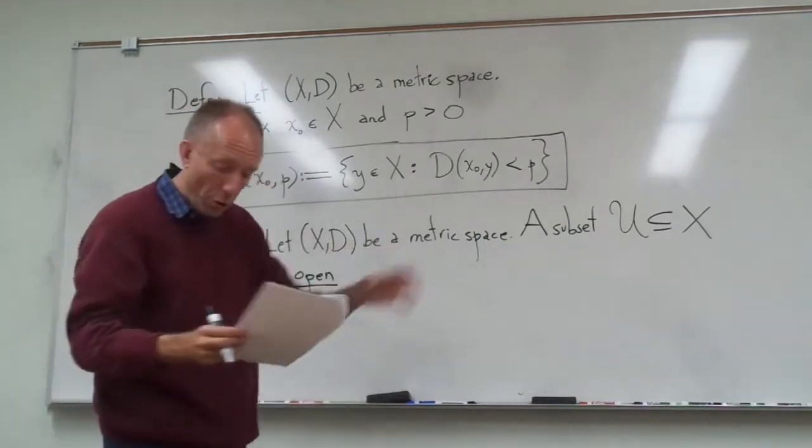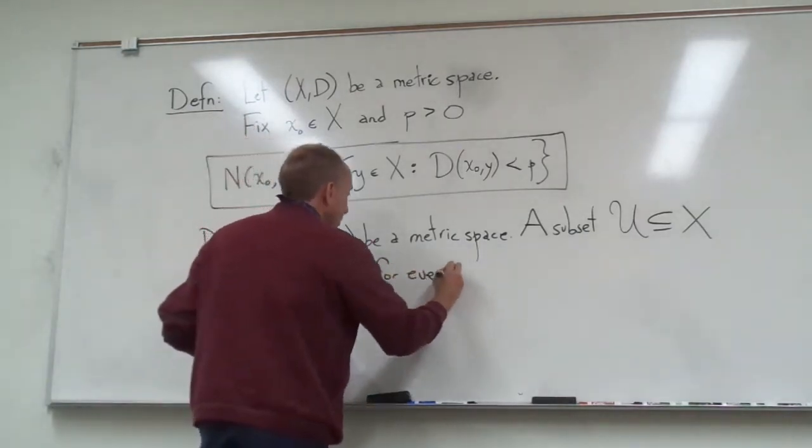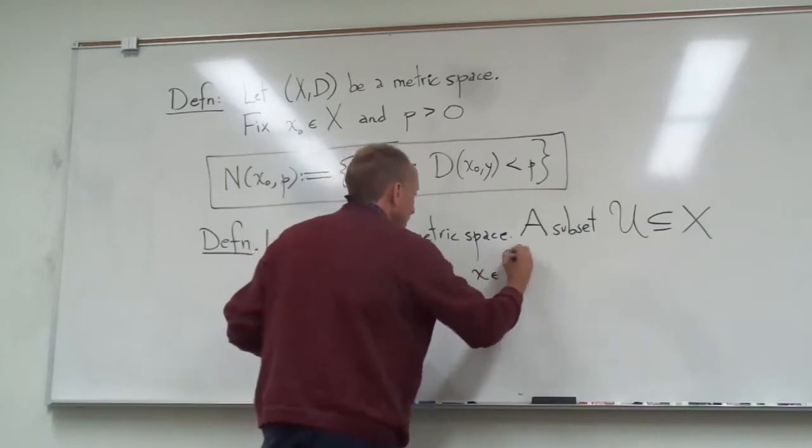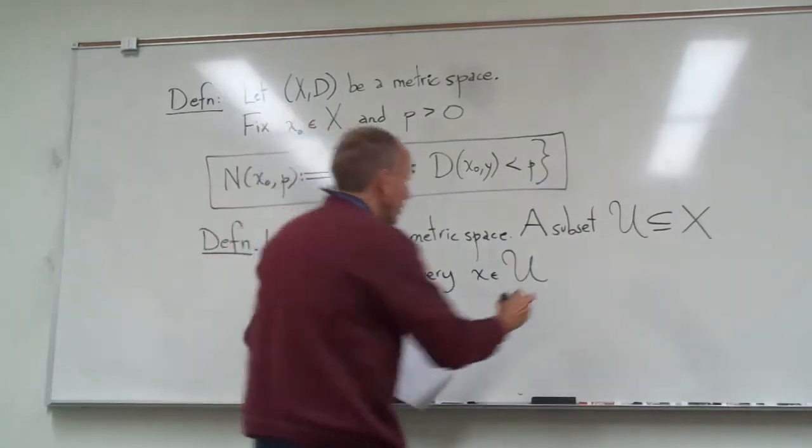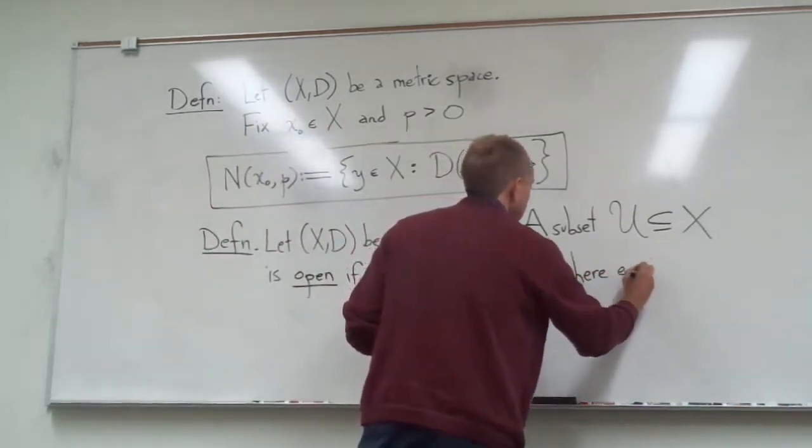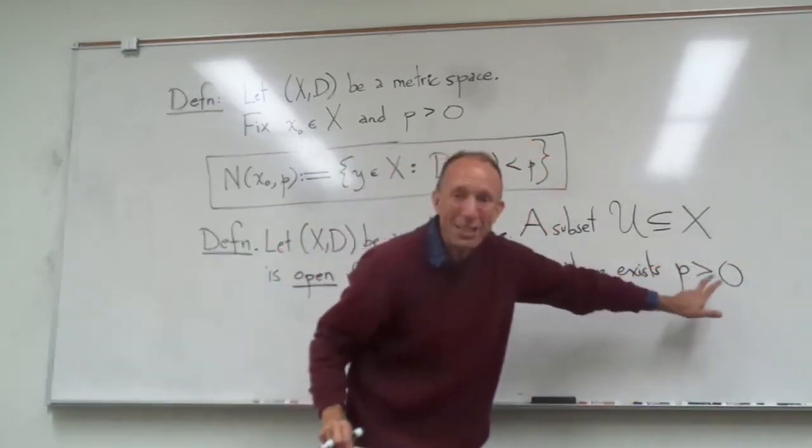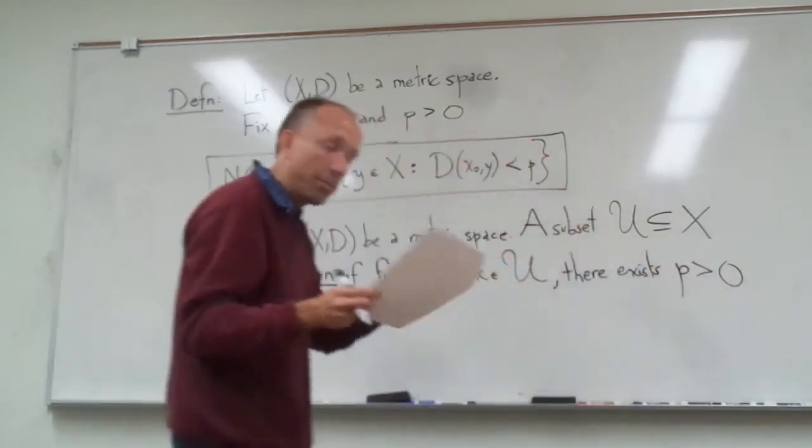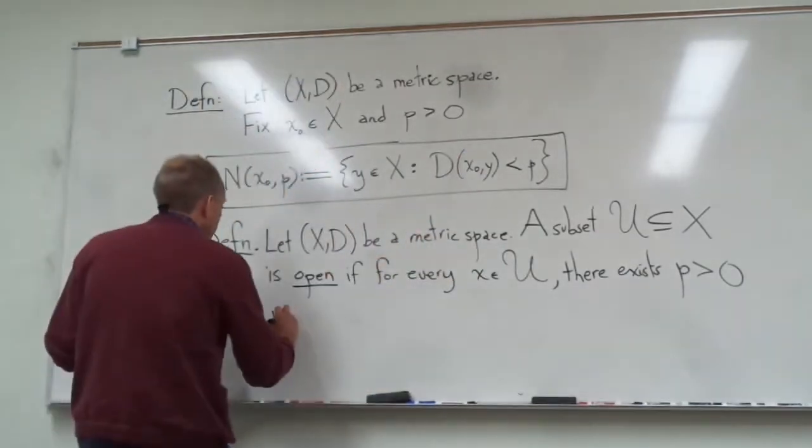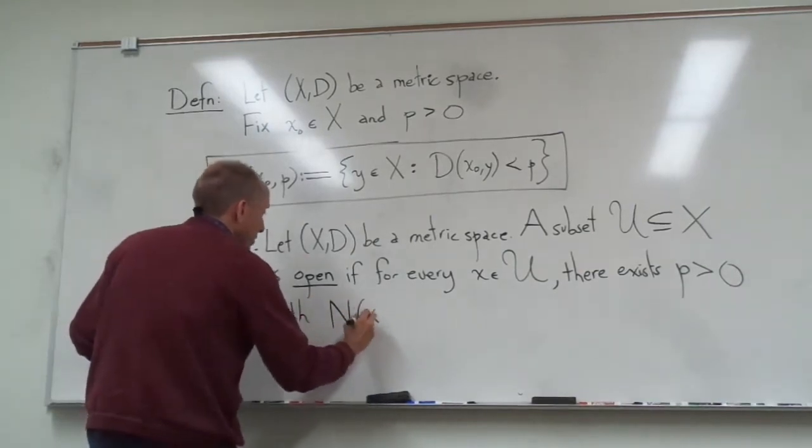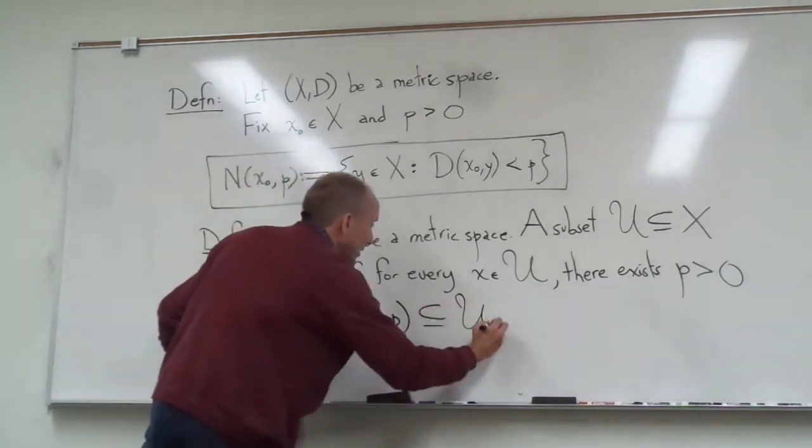We call a subset open if for every point, I'll call it little x, in the open set, in the subset u, for every point in there, there exists a radius. I can make up a radius p. I can choose a radius, it might be a very small radius, but I can choose a positive number p with the neighborhood centered at x of radius p completely inside of u.